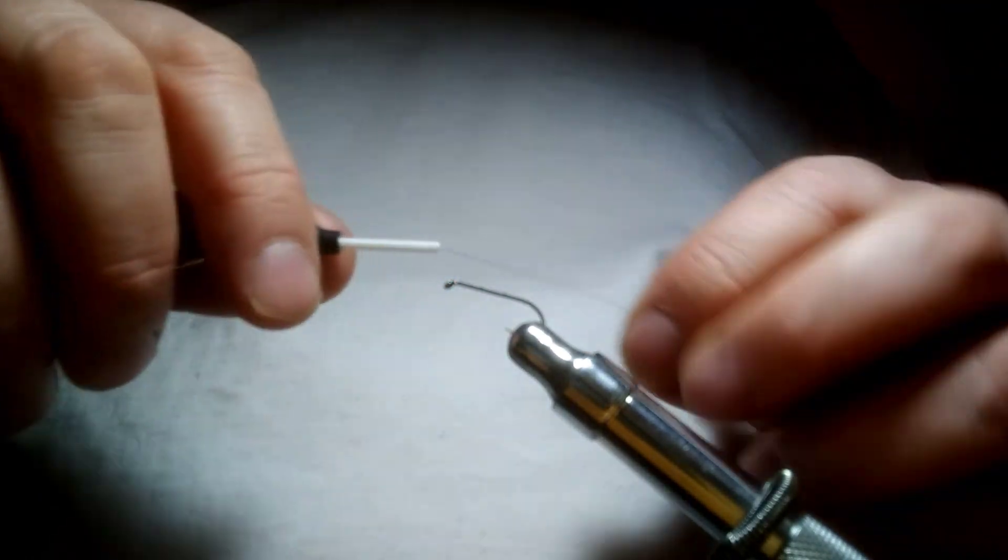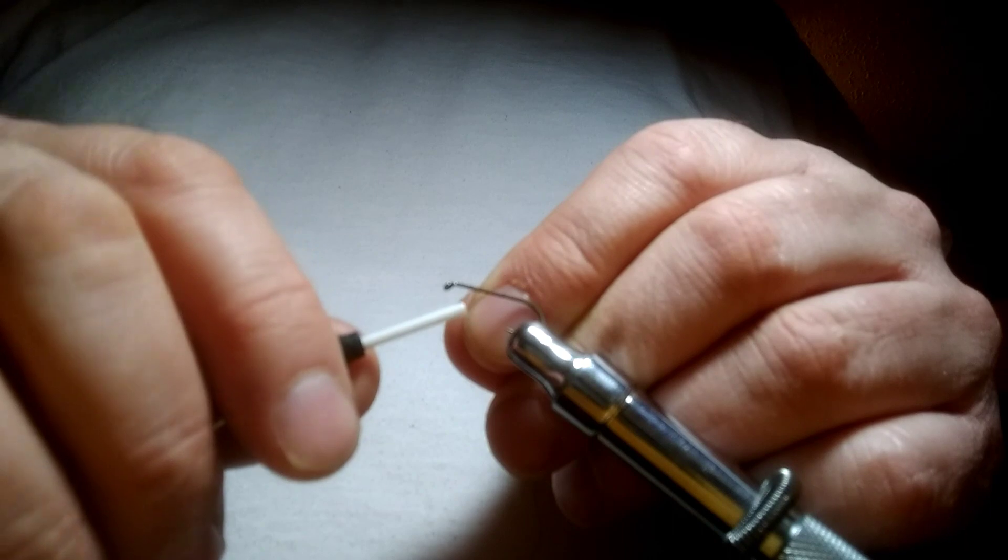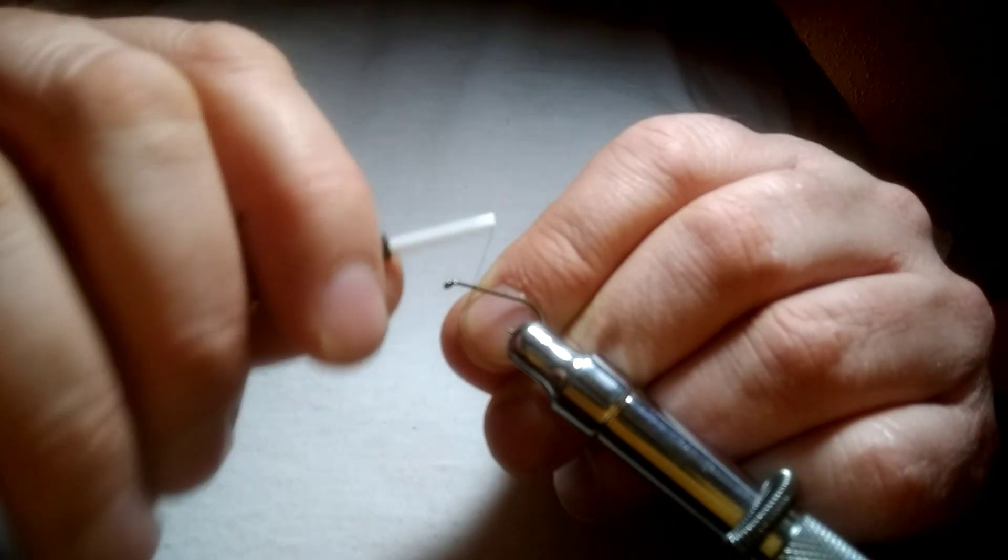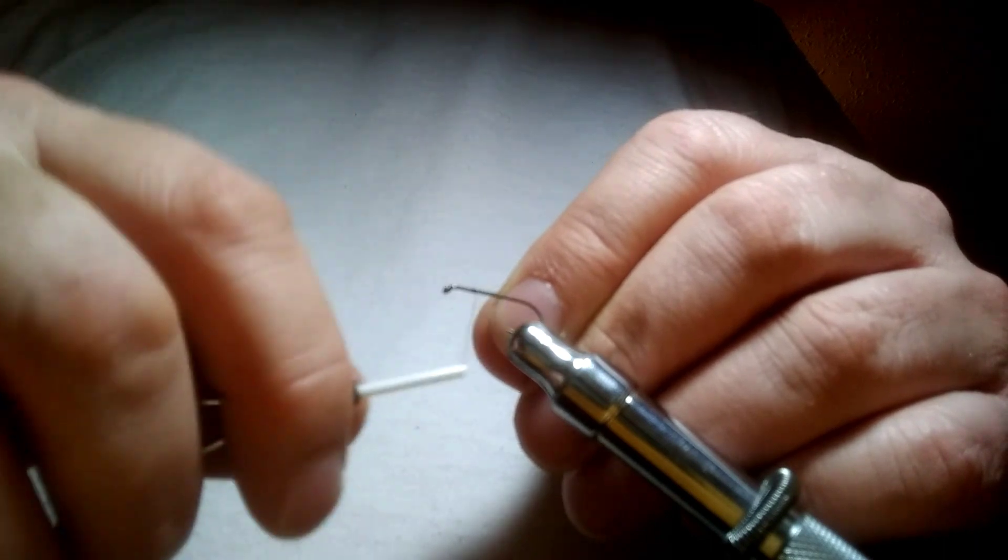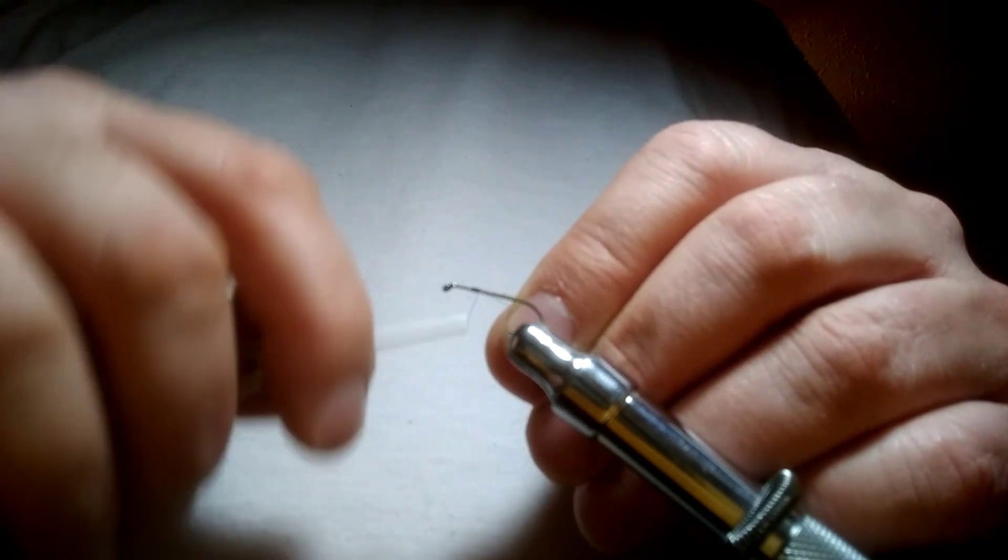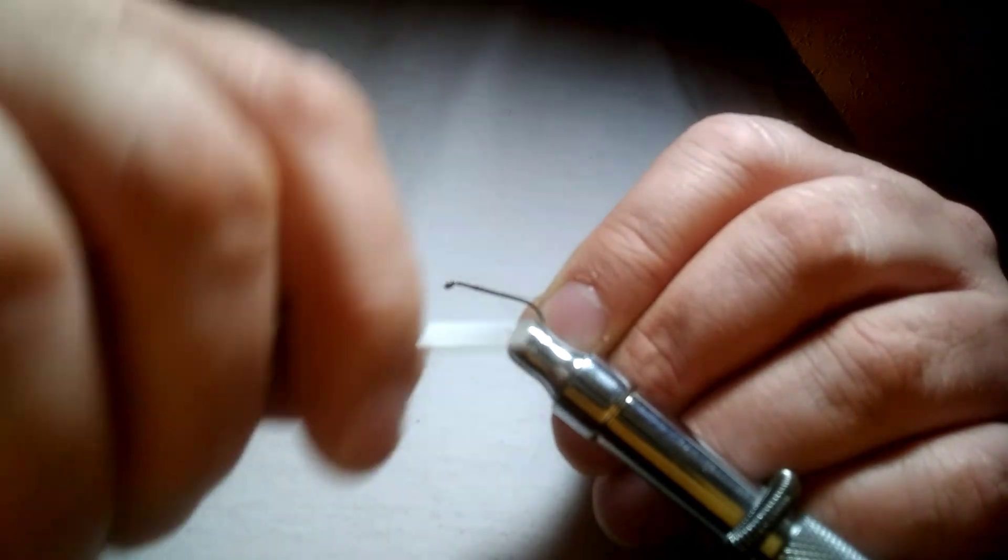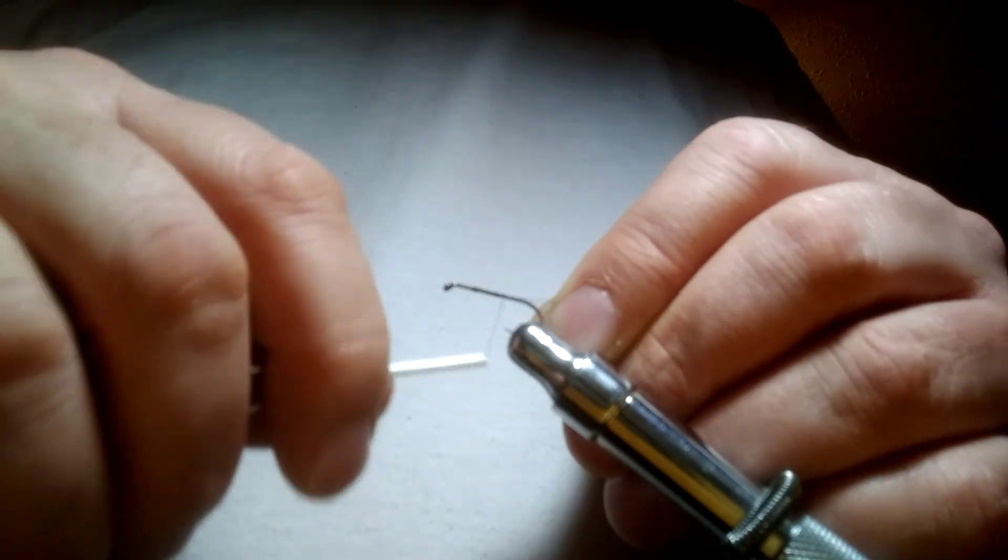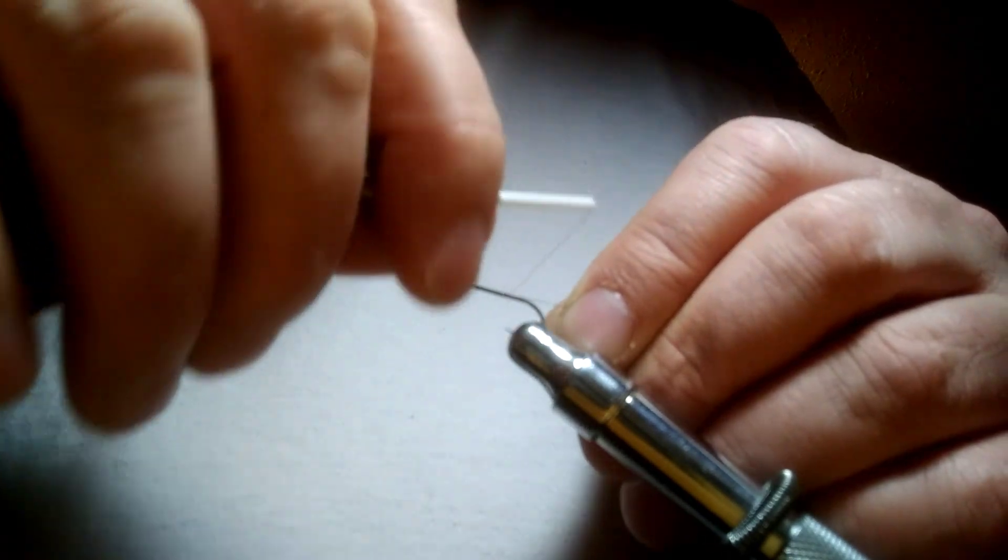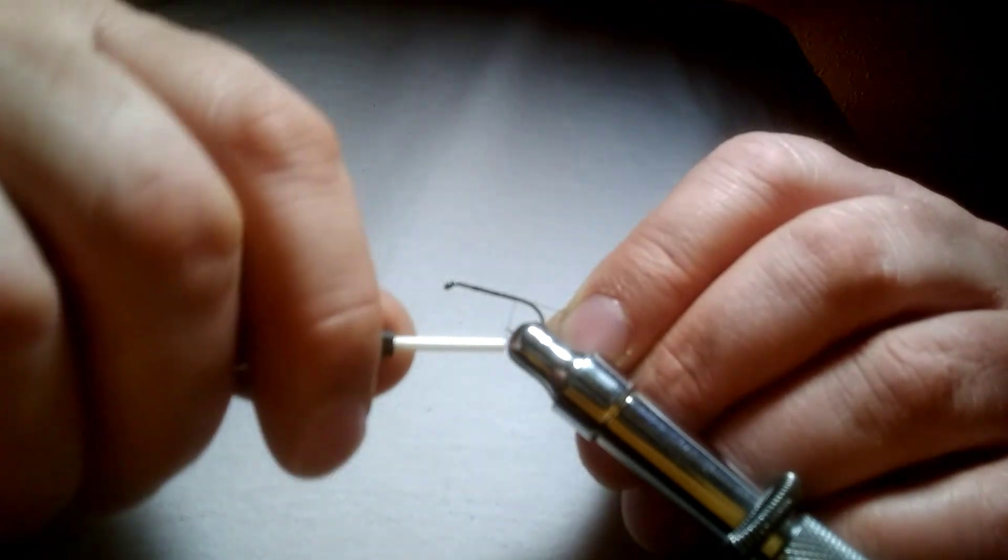You want to take your thread and start about three quarters of the way up or a quarter of the way back from the eye. Bring the thread all the way back to the bend in the hook. Make sure you avoid that little tip there of the hook.